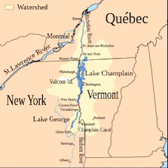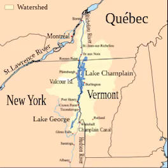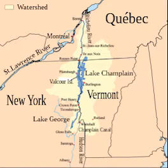Lake Champlain drains nearly half of Vermont, and approximately 250,000 people get their drinking water from the lake. The lake is fed in Vermont by the La Platte, Lamoille, Missisquois, Pulteney and Winooski Rivers, along with Lewis Creek, Little Otter Creek and Otter Creek.